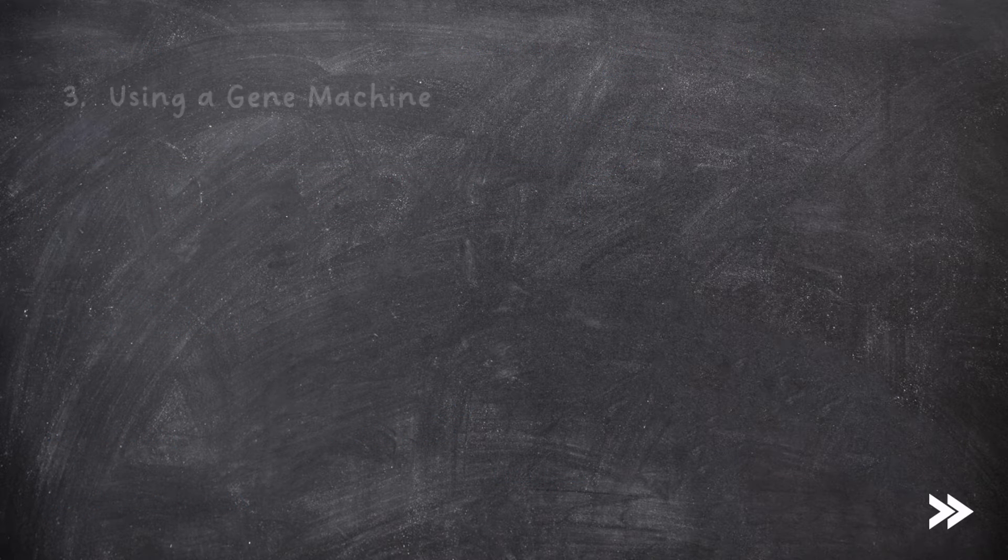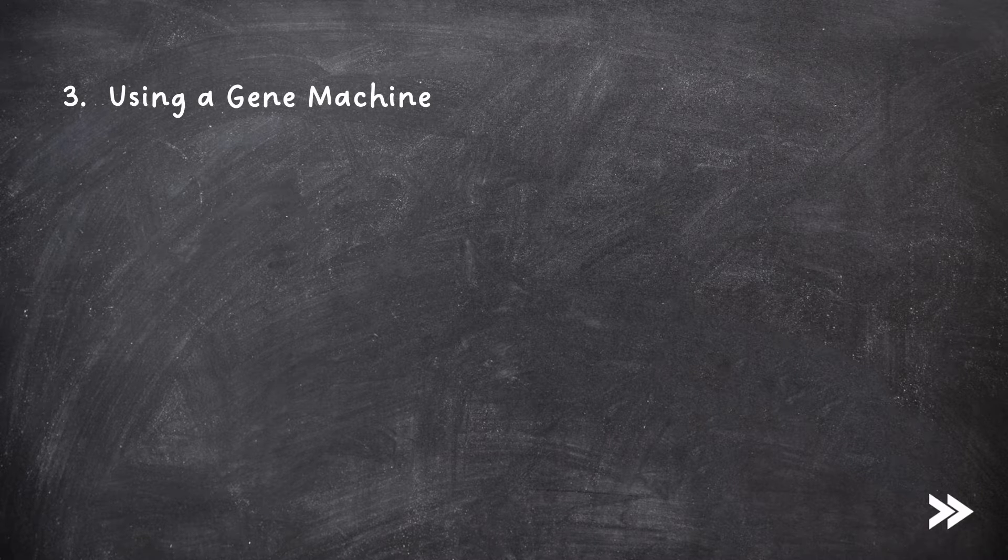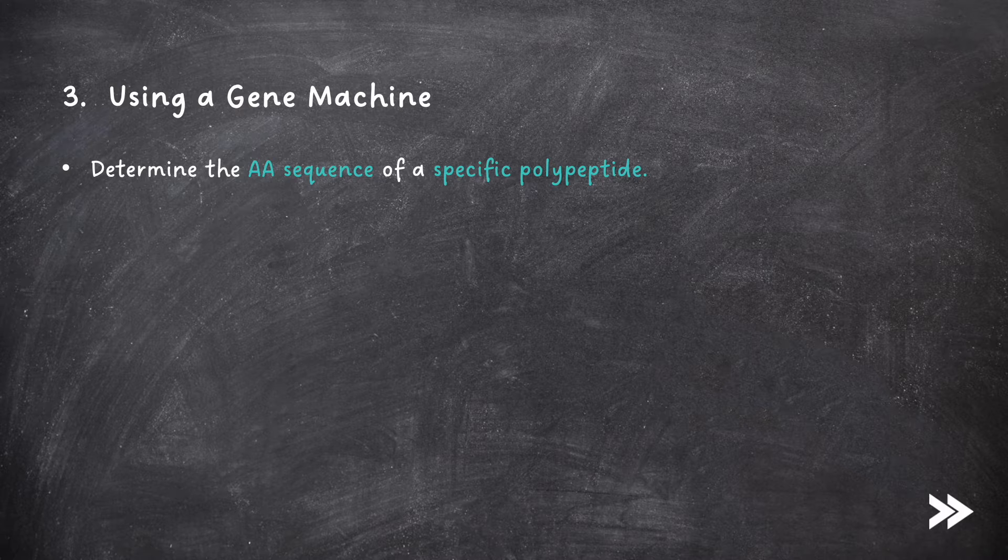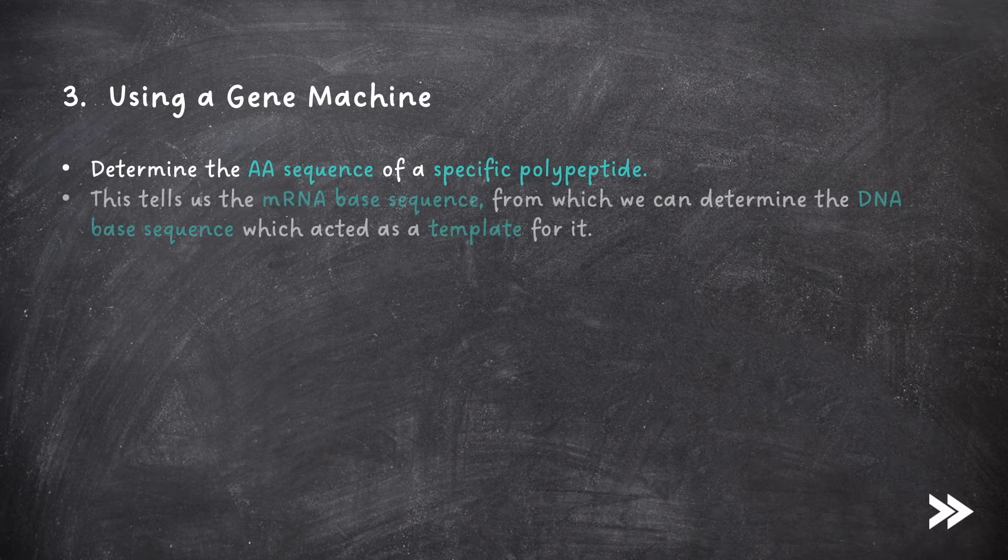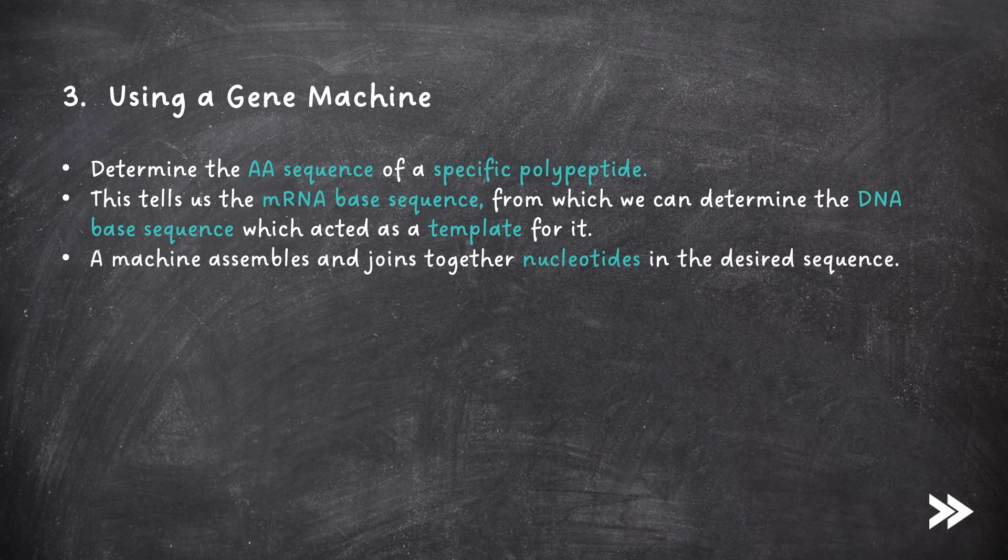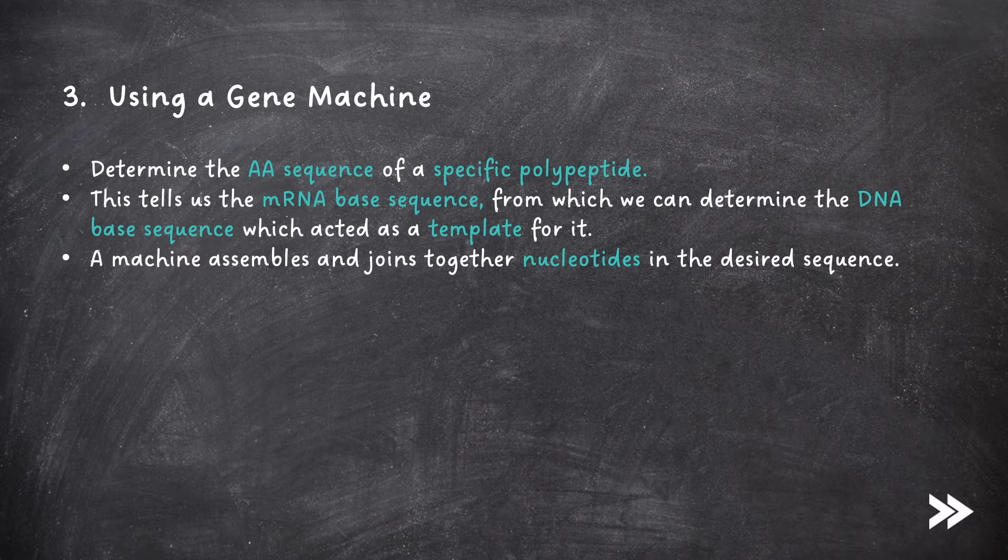Finally, we could also use a gene machine to produce DNA fragments. First, we determine the amino acid sequence of a specific polypeptide that we want to produce. This tells us the mRNA base sequence, from which we can determine the DNA base sequence which acted as a template for it. The gene machine then assembles and joins together nucleotides in the desired sequence.